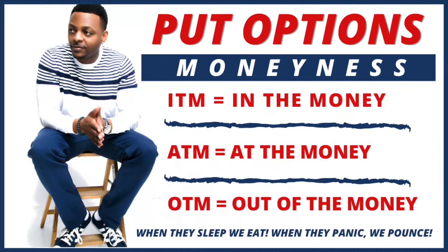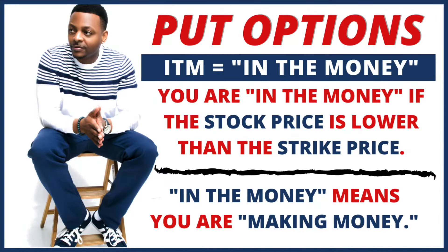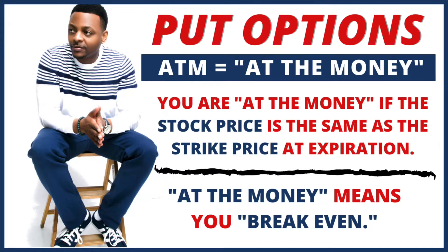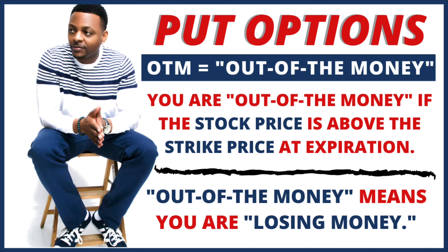Before we jump into it, let me introduce you to some terms — put option moneyness. You have three terms you need to know: in the money, at the money, and out of the money. With in the money for put options, you are in the money if the stock price is lower than the strike price — meaning you're making money. At the money means the stock price is the same as the strike price at expiration, so you're breaking even. Out of the money means the stock price is above the strike price at expiration — long story short, you are losing money.